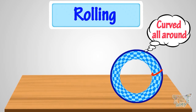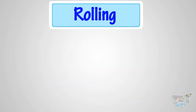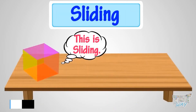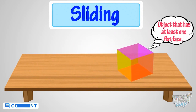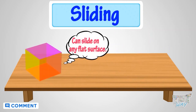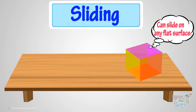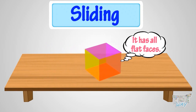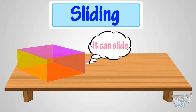So kids, we learned what rolling is and a few shapes that can roll. Now we will learn what sliding is. Any object that has at least one flat face can slide on any flat surface. This is a cube — it can slide as it has all flat faces. This is a cuboid — it can slide as it too has all flat faces.